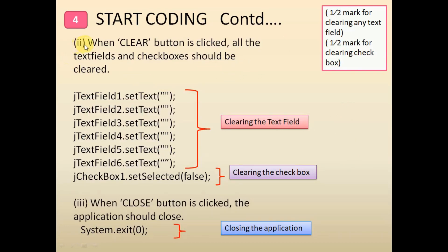Now for the second part — the clear button. When the clear button is clicked, all text fields and checkboxes should be cleared. The statement for clearing a text field is jTextField1.setText(""), and the same statement is used for all text fields present in the form. For clearing the checkbox, the statement is jCheckBox1.setSelected(false). According to the board marking scheme, half a mark is for clearing all text fields and half a mark for clearing the checkbox.